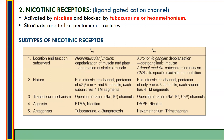Regarding the transducer mechanism, NM involves opening of cation channels — sodium and potassium — while NN involves opening of cation channels including sodium, potassium, and calcium. The agonist for NM is PTMA (phenyl trimethyl ammonium) and nicotine; antagonists are tubocurarine and alpha-bungarotoxin. The agonist for NN is DMPP (dimethyl phenyl piperazinium) and nicotine; antagonists are hexamethonium and trimethaphan. This completes the discussion of nicotinic receptors. Thank you.